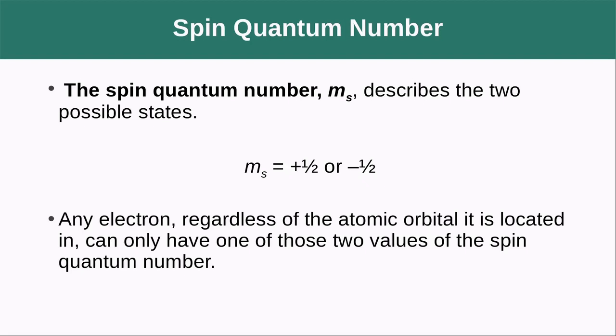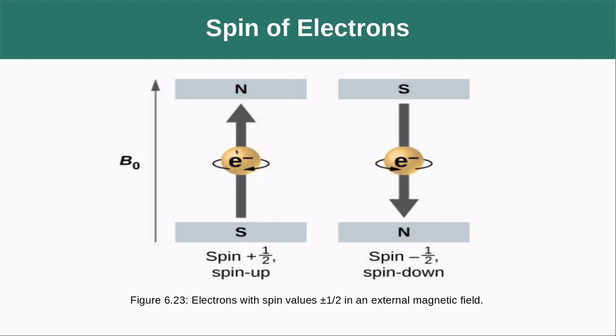The spin quantum number ms describes the two possible states: +½ or -½. The basic idea is that a vector pointing through it could be up or down. Traditionally, people thought the electron was spinning—this has only been debunked in recent years. You can think of the electron as a little magnet with north and south poles that can be oriented one way or another. When you apply an outside magnetic field, the electron can orient to it or against it.